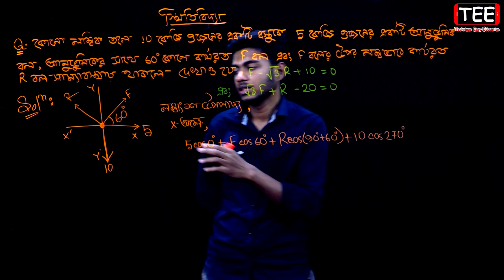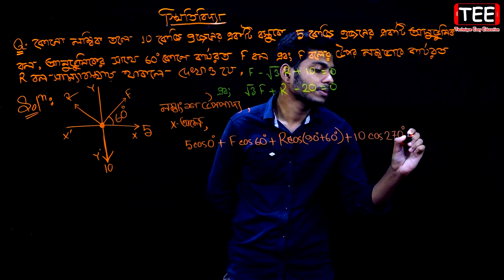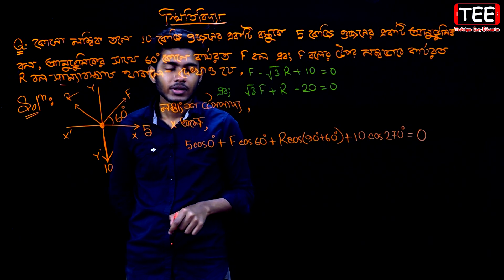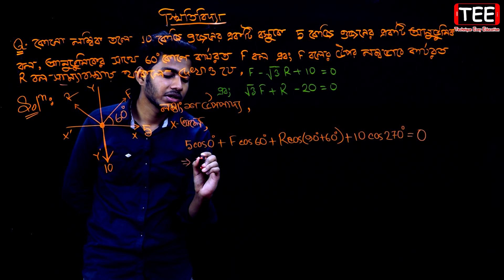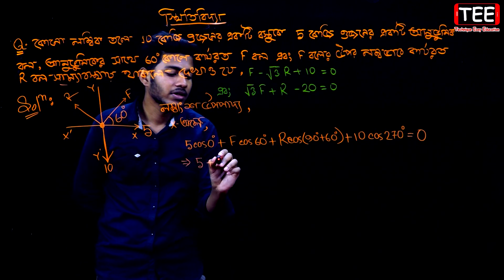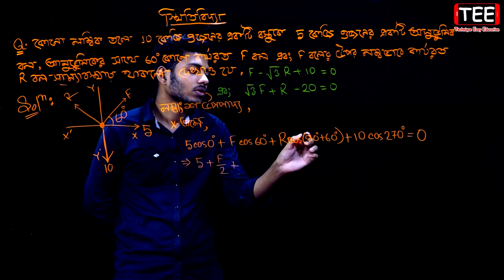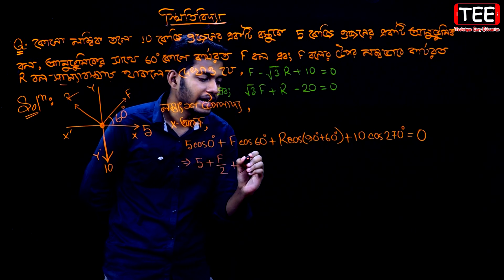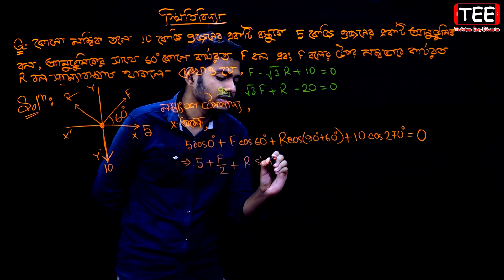270 degrees. So, if x is 90 plus 90 plus 90, that is 270. If you call this 0, then it is 0, because it is the same. So, cos 0 is 1, then 5 is 5. Cos 60 is half, so F divided by 2, plus cos 90 plus 60. So, cos 90 plus 60 equals r into sin 60. Cos 0 is 0.